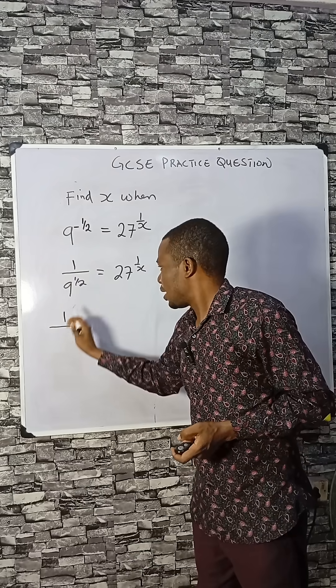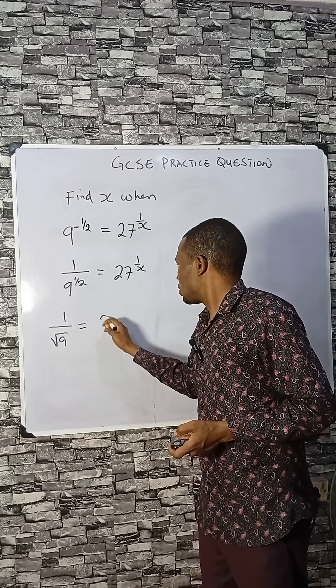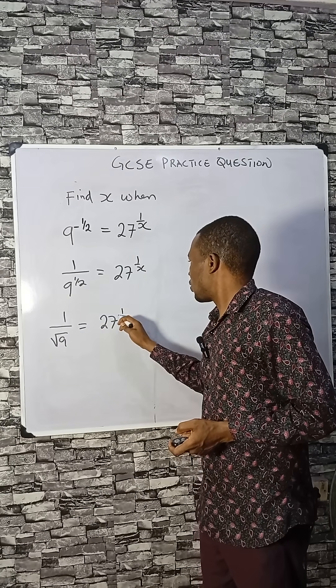This is 1 over 9 raised to the power half, which is the square root of 9, equals to 27 raised to the power 1 over x.